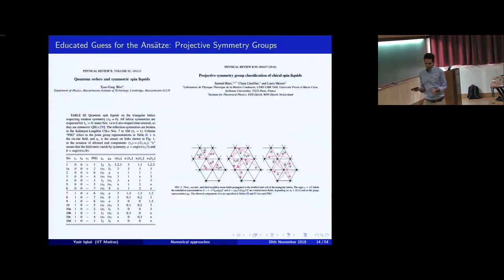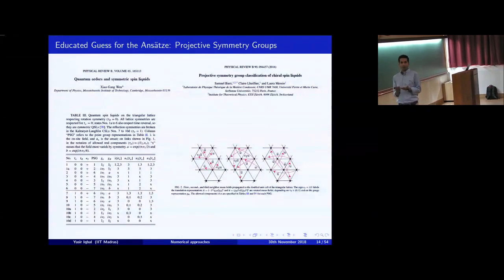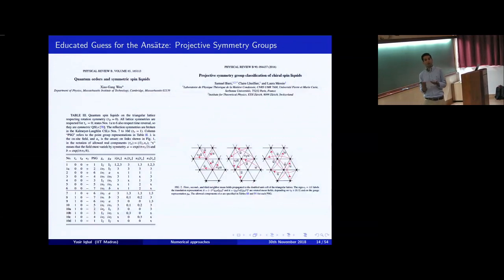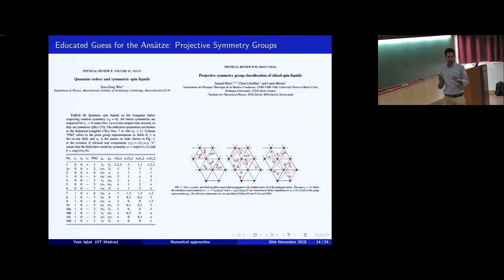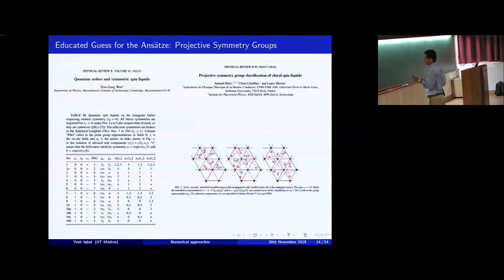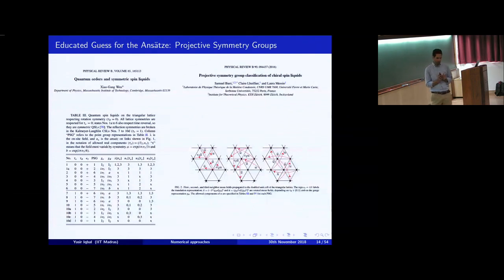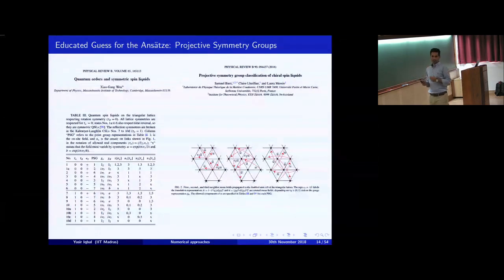These variational wave functions are good educated guesses. They are mean field ansätze — Wen did not tell us for which Hamiltonian they will occur as ground states, but he told us at least what all there are. Unless you are remarkably lucky, this will not turn out to be an eigenstate of your Hamiltonian or the exact ground state. So this can be a good starting point on which you can then systematically improve the ansätze.